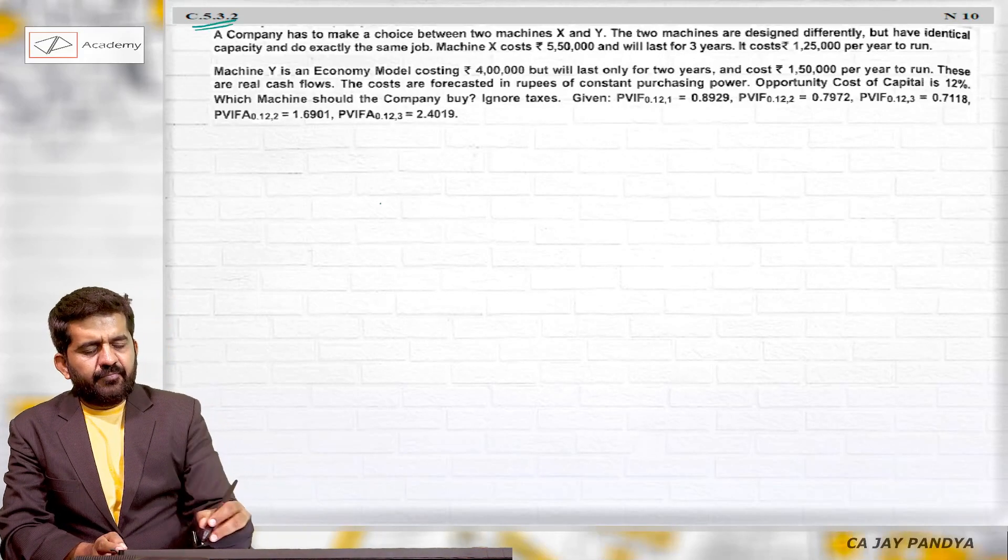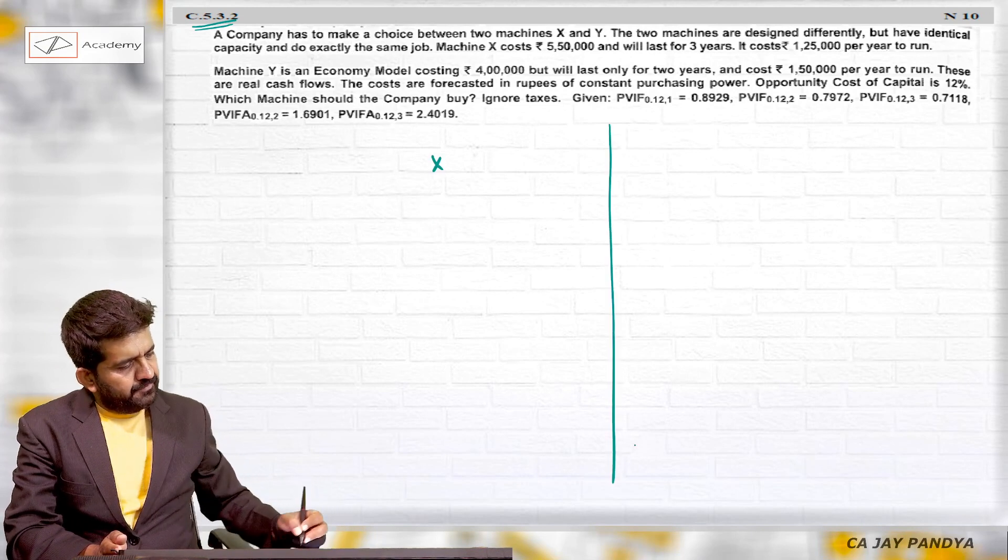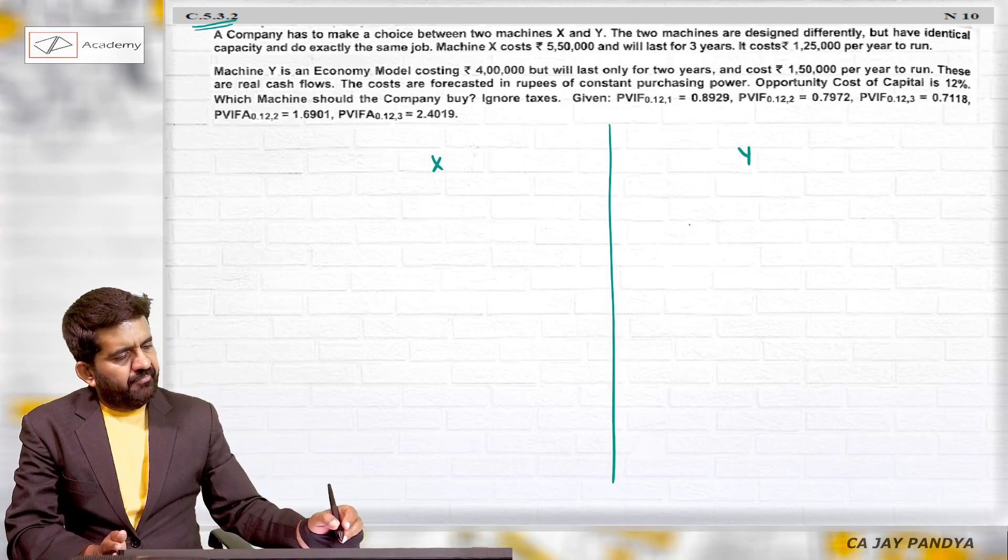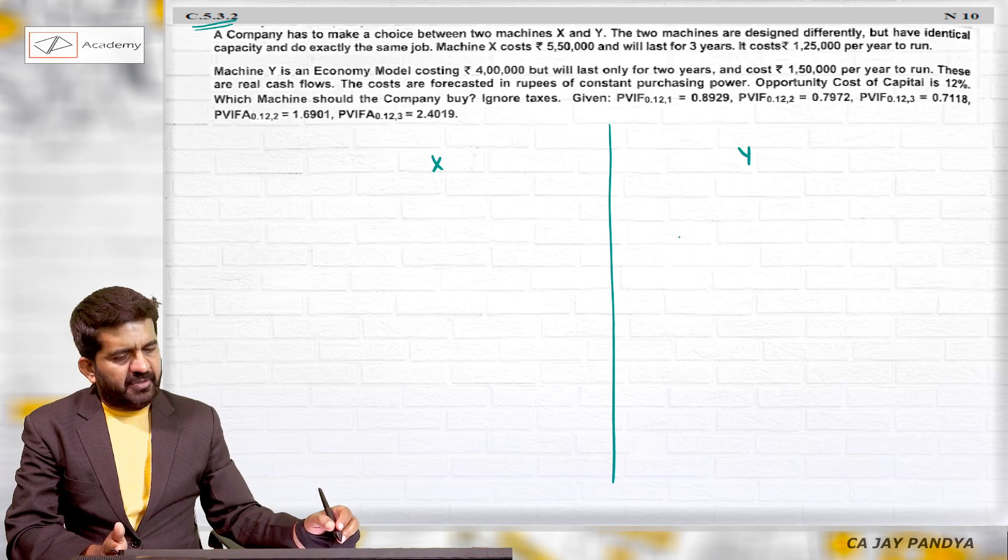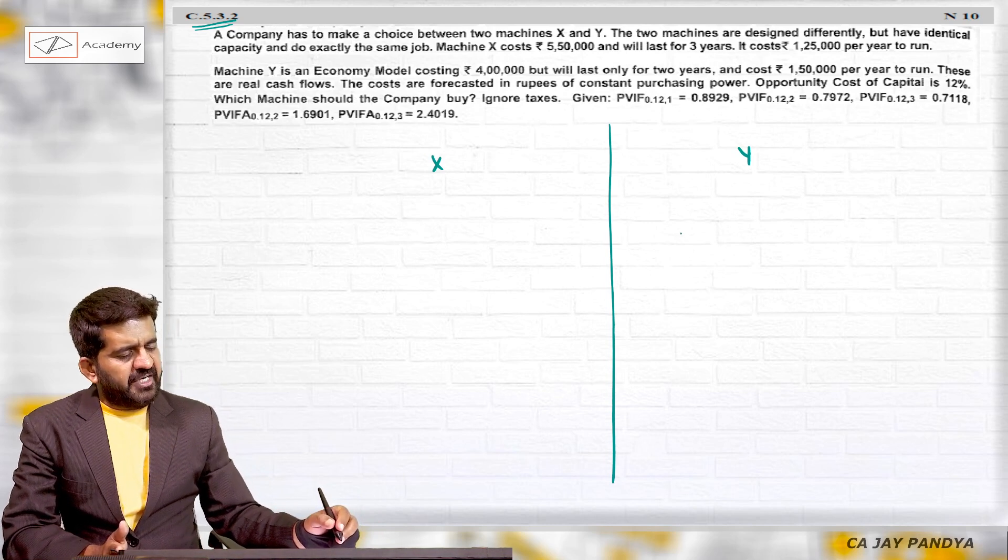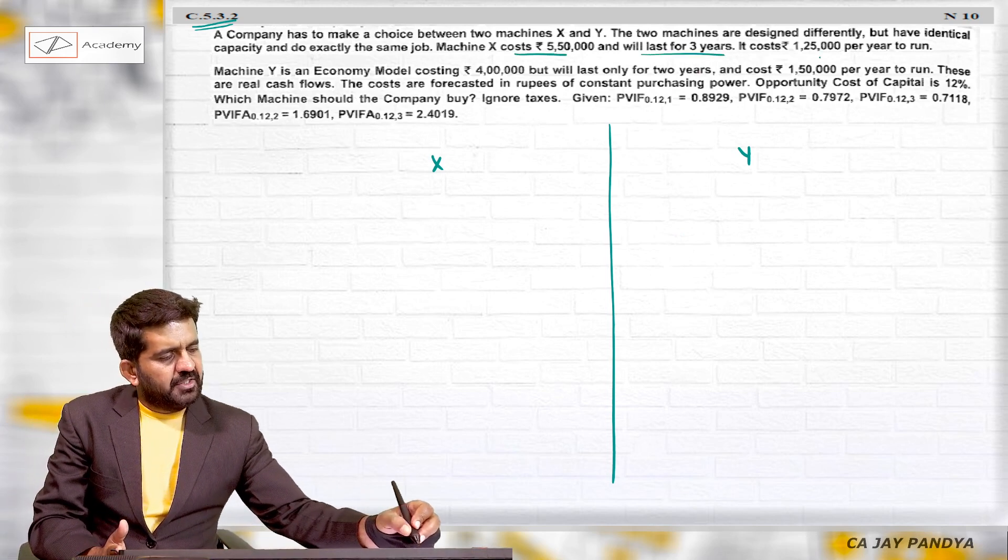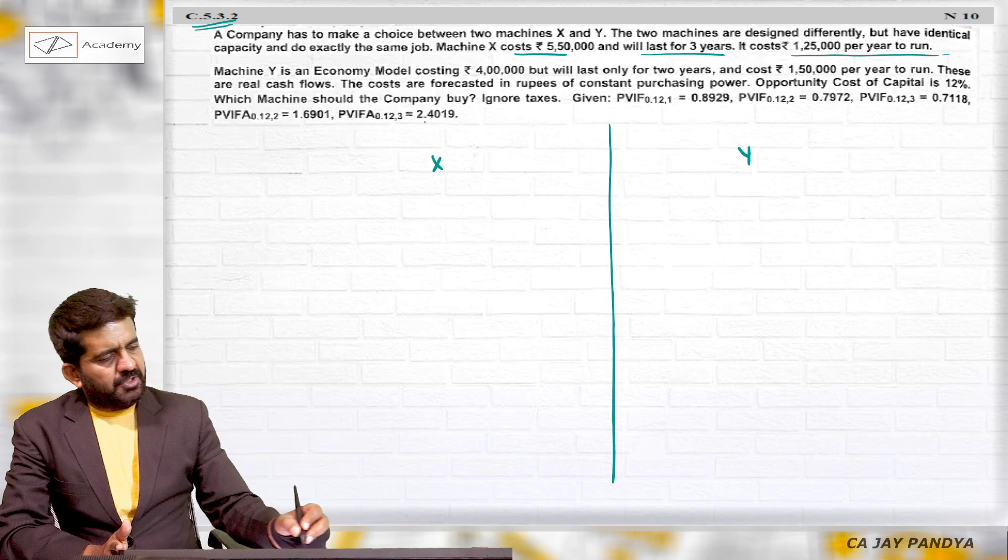Question C 5.3.2: A company has to make a choice between Machine X and Machine Y. The two machines are designed differently but have identical capacity and do exactly the same job. Machine X costs 5 lakh 50,000 and will last for three years. It costs 1 lakh 25,000 per year to run.